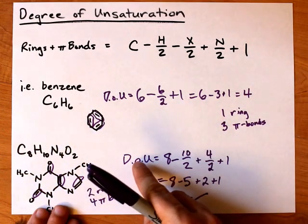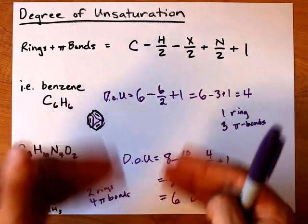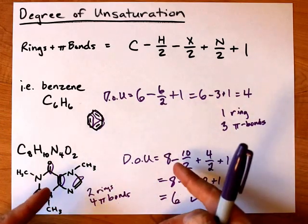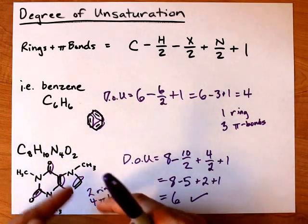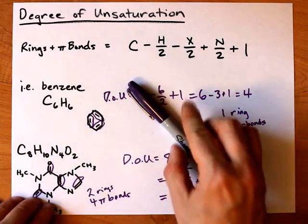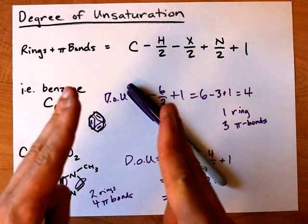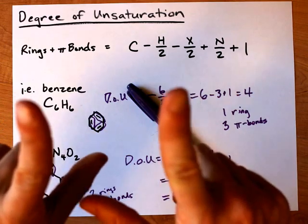If your degree of unsaturation is 6 and you don't propose a structure with two rings and four pi bonds, or some combo that adds to 6, you best believe you're getting it wrong. Because this system works. Degree of unsaturation. Best of luck.